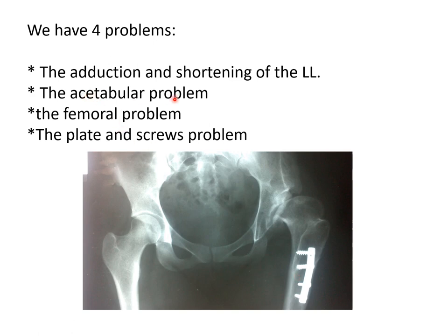We have the acetabular problem, which is large and shallow, and this should not deceive you while doing the total hip replacement. If you ream the whole acetabulum, you will end up with proximal migration of the center of the hip. You have to be careful and do your reaming in the lower part of the acetabulum.